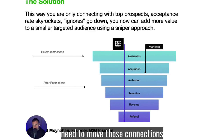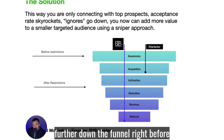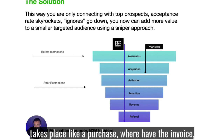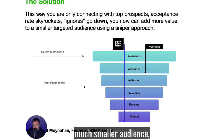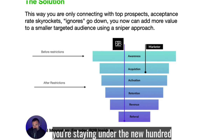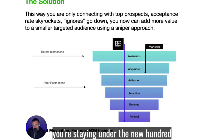To get around this, you need to move those connections further down the funnel, right before a high-conversion event takes place — like a purchase or they pay the invoice. Those connection requests should be going out to a much smaller, much more targeted group. That way your acceptance rate goes through the roof, your response rates are more thoughtful, and you're staying under the new 100-per-week connection requests limit.